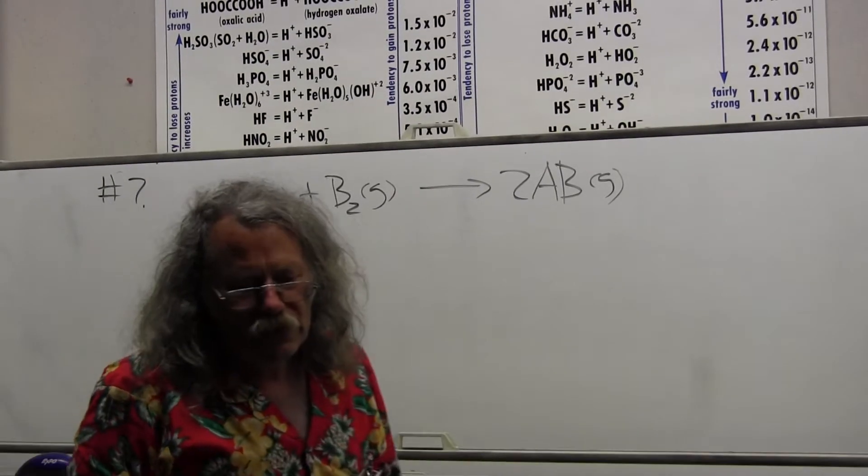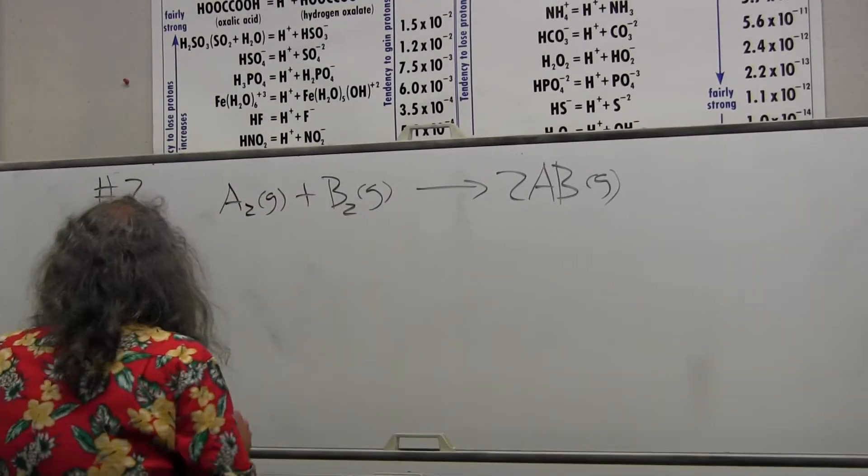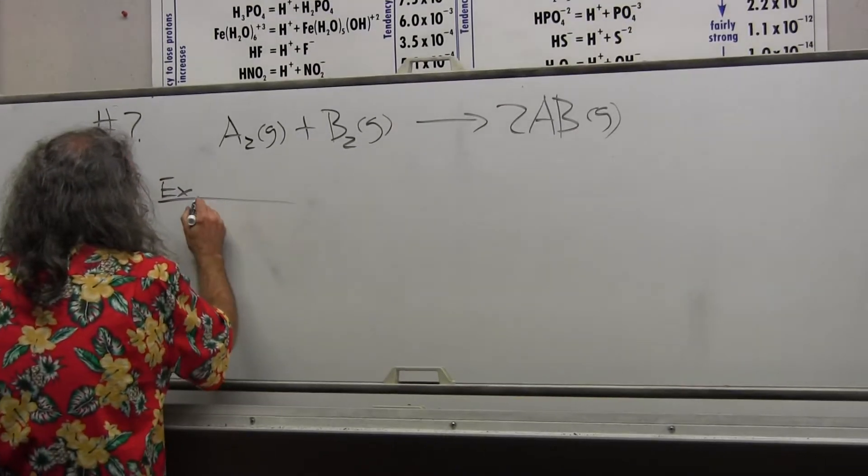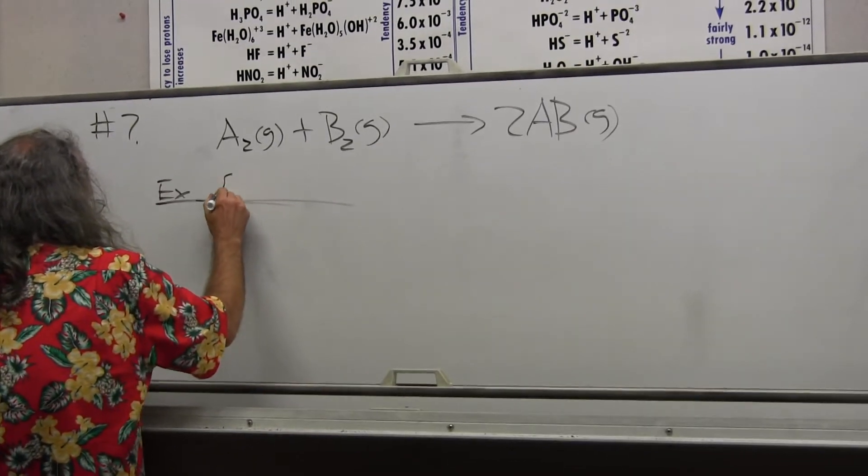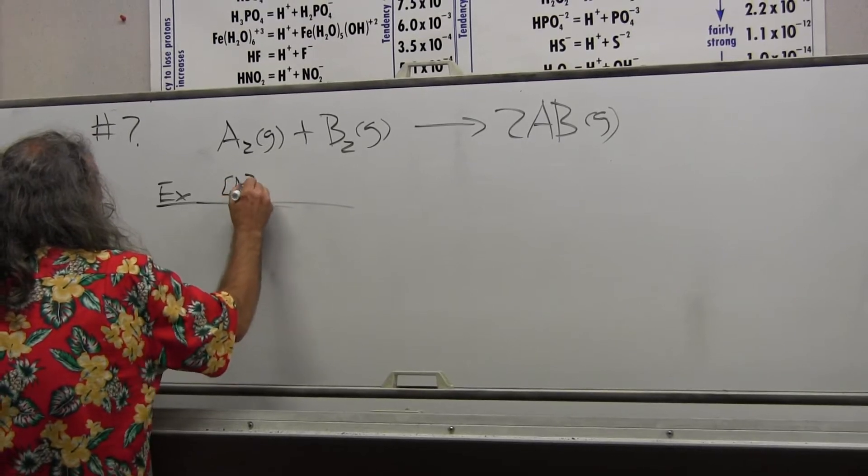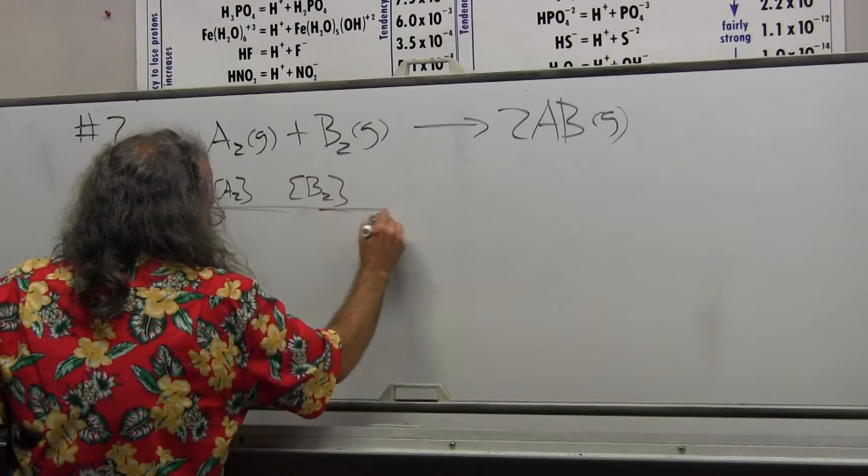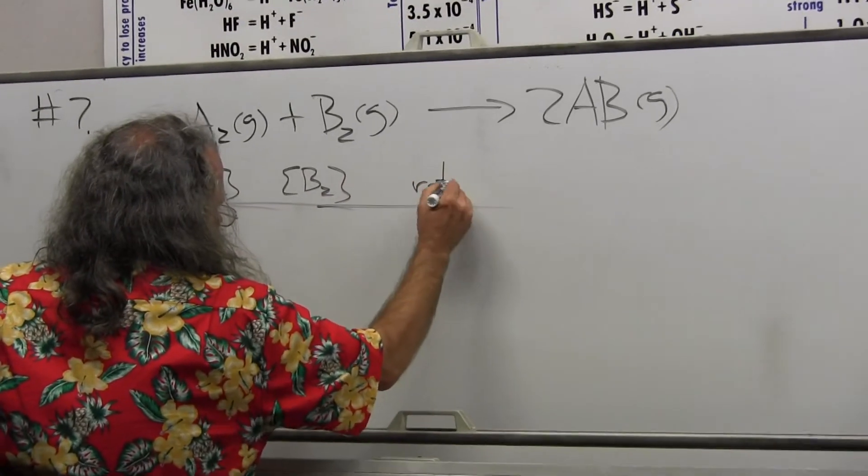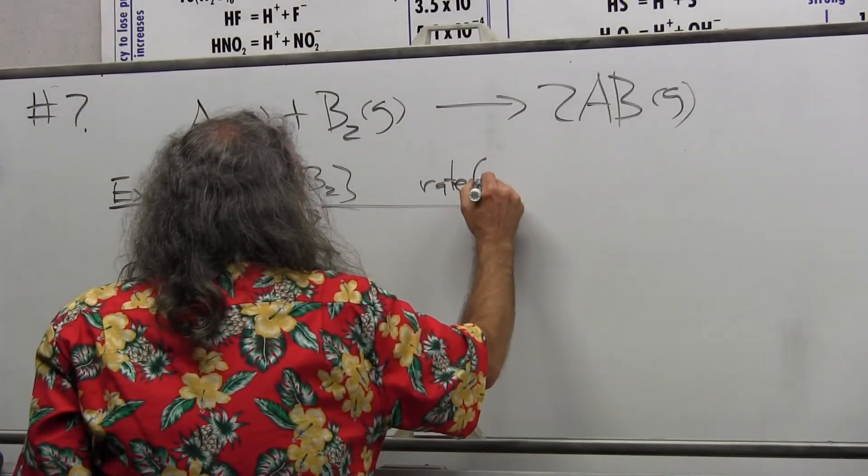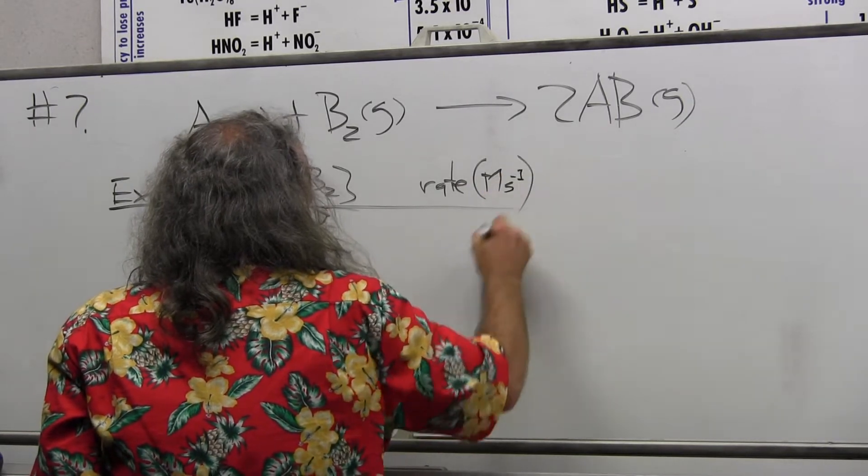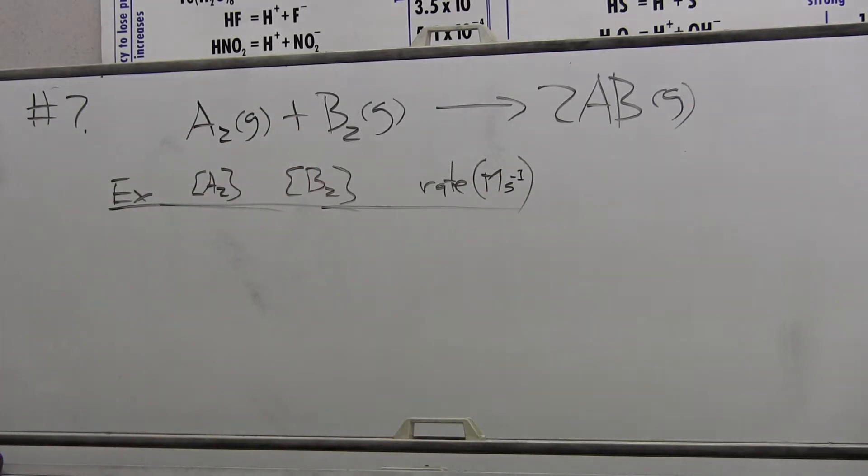The following data is obtained. Experiment one number, and then I have the concentration of A2 and the concentration of B2, and then the rate, and that's in moles per liter per second. I've got all the units.